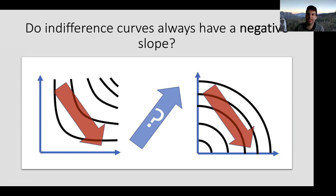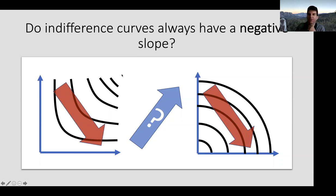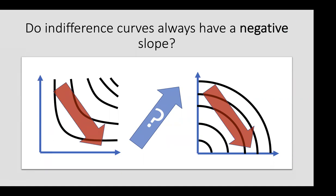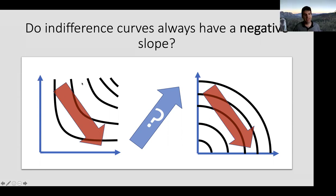A student asks: if you see graphs like the two pictures on screen, would both be considered negative slopes? Yes—although the acceleration of the slopes differs, they start upper left and end lower right, so they're generally negatively sloping. Any point along either indifference curve has a negative slope. The student also asks about the difference between the two graphs. We'll review that in about four slides, but basically one shows diminishing marginal returns and the other shows accelerating marginal returns.